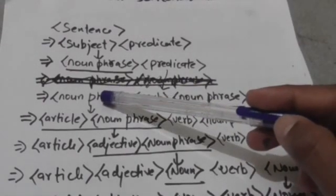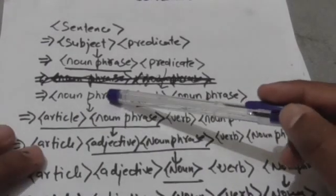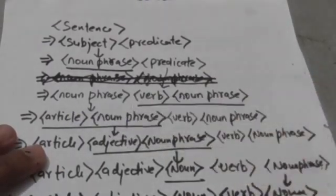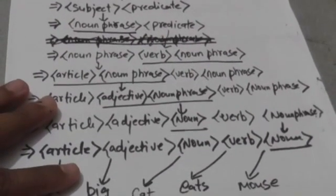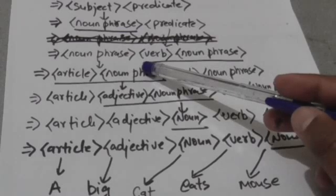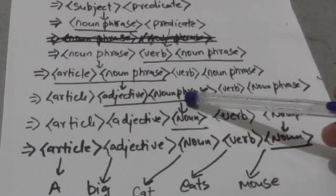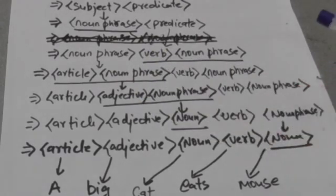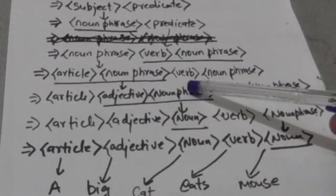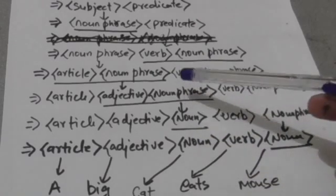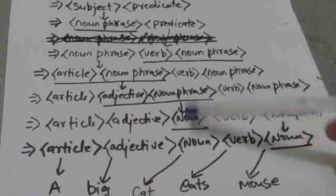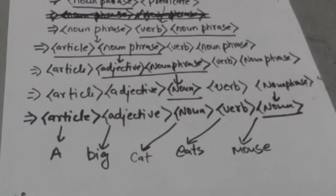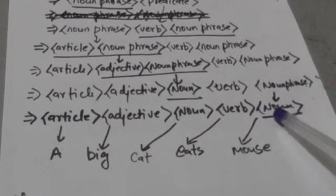Noun phrase can be an article followed by noun phrase, so here this noun phrase has been replaced by article followed by noun phrase. Now a noun phrase can be an adjective followed by noun phrase, so this noun phrase is replaced by adjective followed by noun phrase. Now noun phrase can be a noun, so I have replaced this noun phrase by noun.